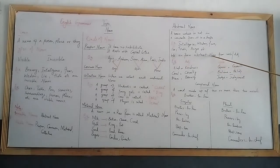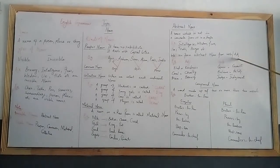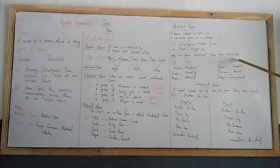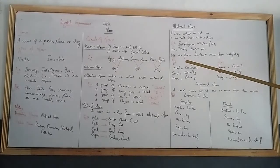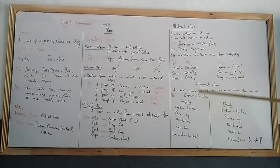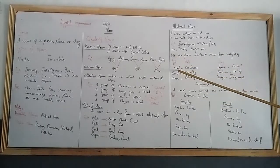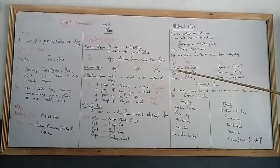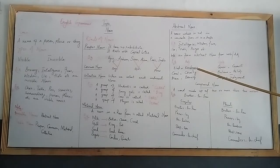We can form abstract nouns from verbs and adjectives. Adjectives like kind - we change it to abstract noun: kindness. Cruel is an adjective, changed to abstract noun: cruelty. Brave is an adjective, changed to abstract noun: bravery.